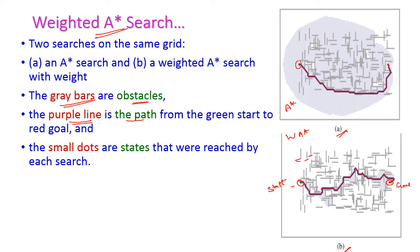In both graphs we have a green start node and a red goal node. The purple line represents the path of A* on the first graph and the path of weighted A* on the second graph. The small dots are the states that were reached by each search. There are many small gray dots, and these represent the states that must be explored to identify the path.